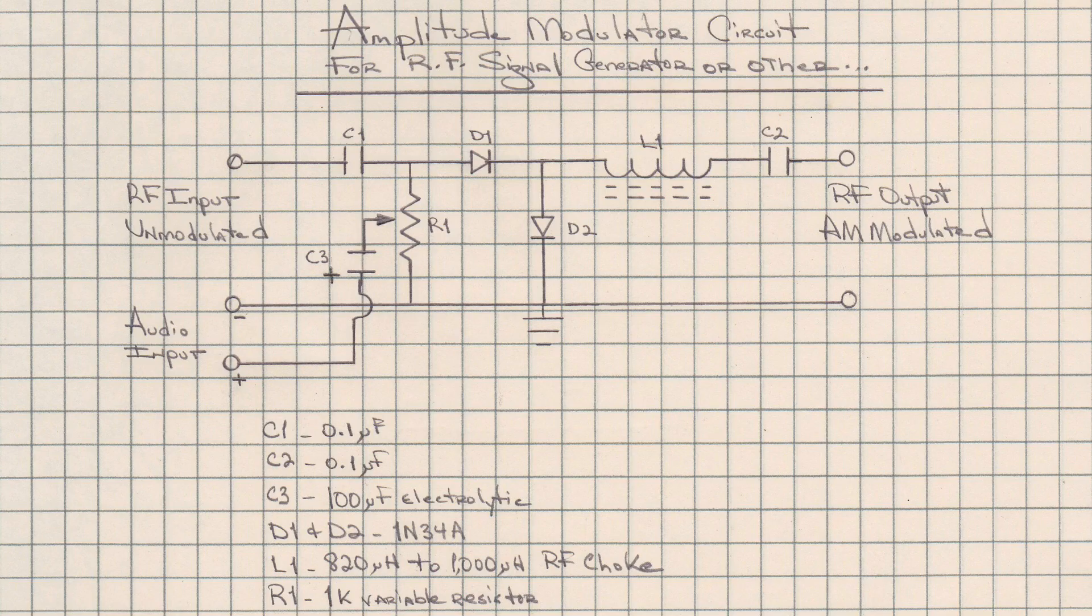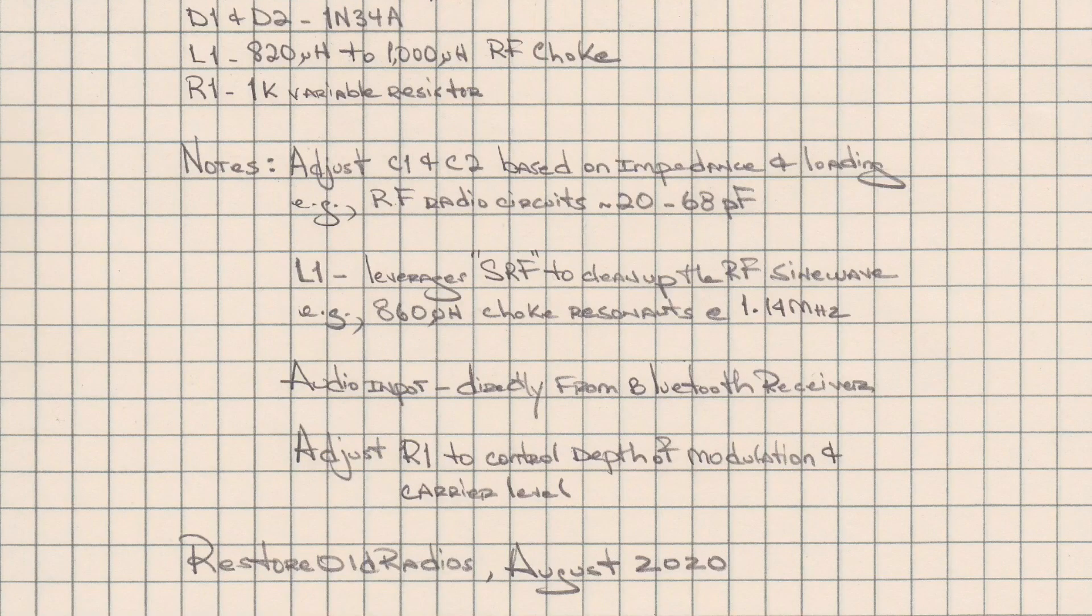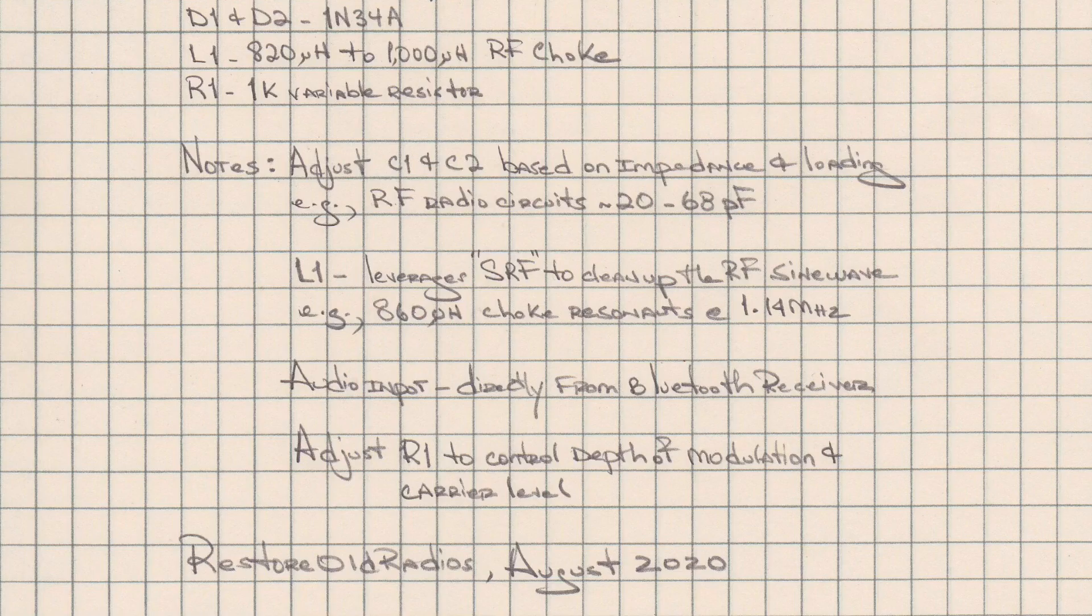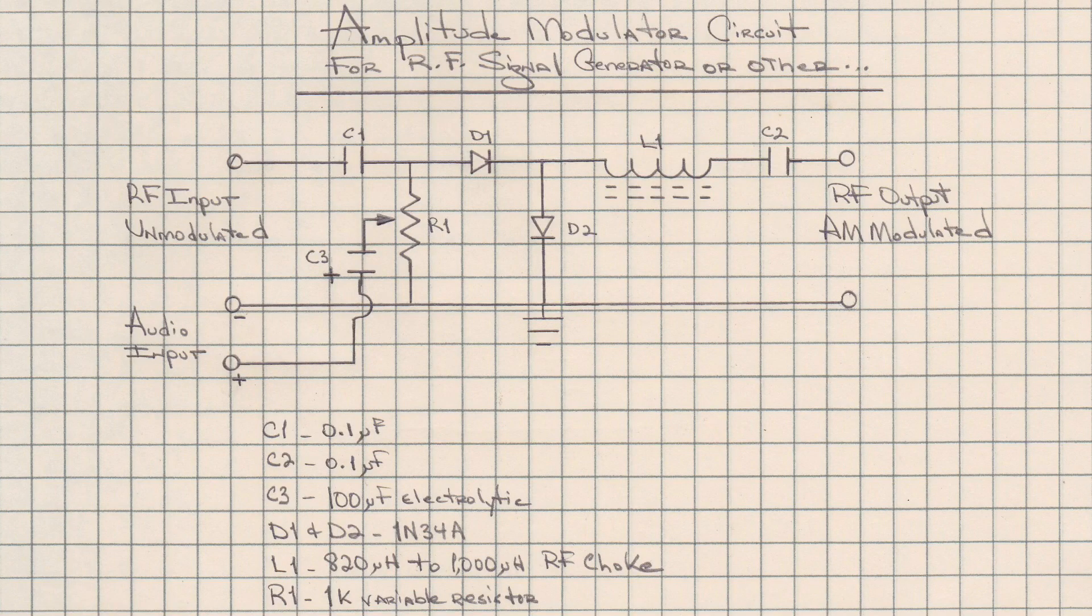You can see the input signal there. Unmodulated RF carrier comes in through C1. I'll have some notes here at the bottom calling out C1 and C2 to be changed out to picofarad values depending on where this is actually inserted within the circuit. R1 is used to adjust the depth of modulation as well as it influences the RF carrier.